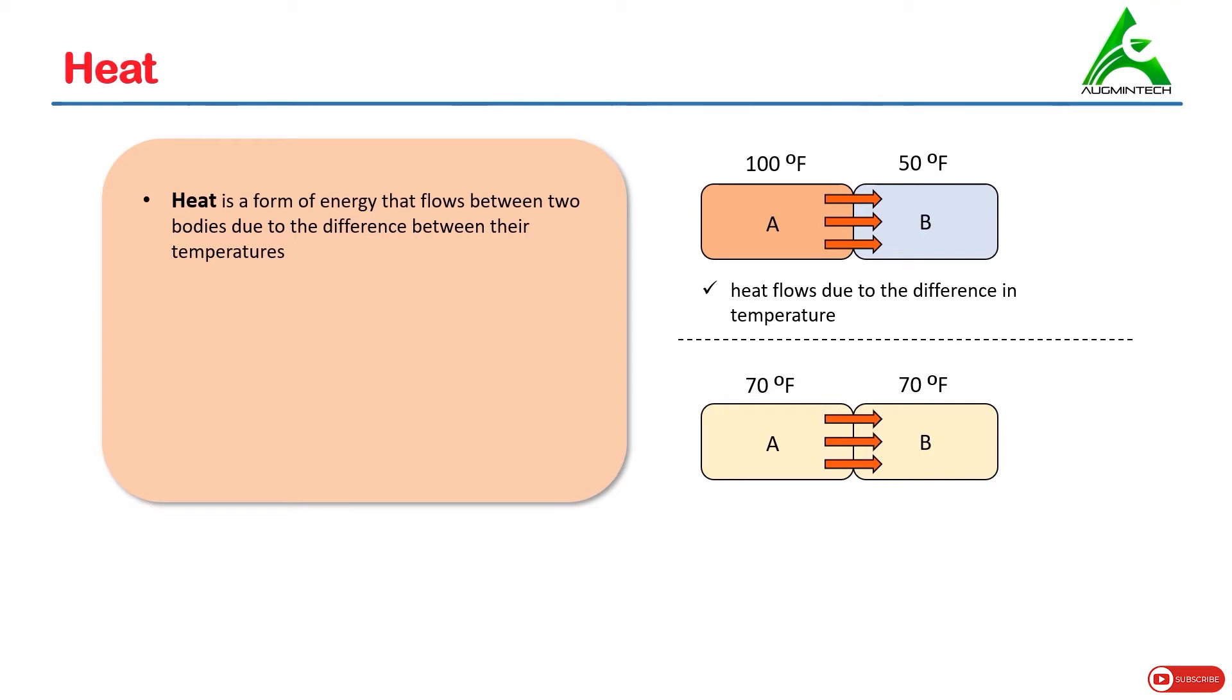Once this situation is achieved, no heat flows between the two bodies. So no heat flow once the temperature of both bodies becomes same, and we say that thermal equilibrium is achieved. Thermal equilibrium means same temperature for both the bodies.